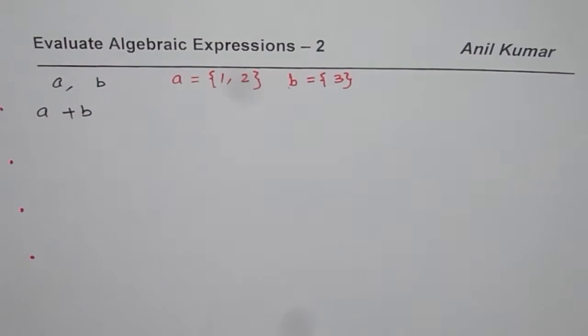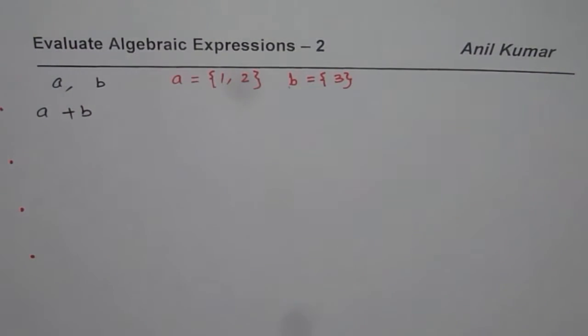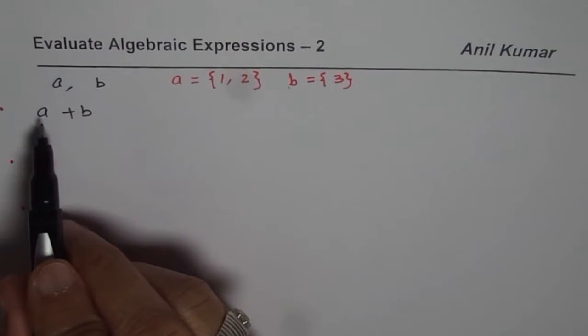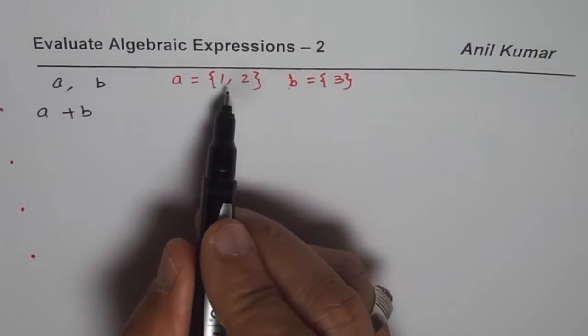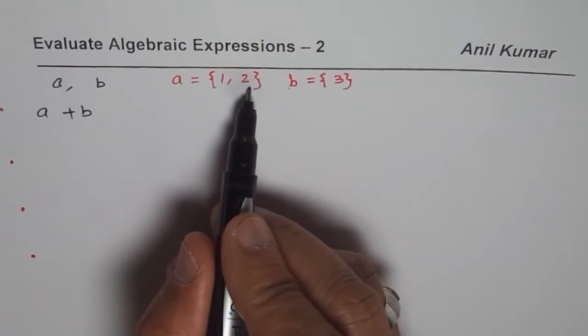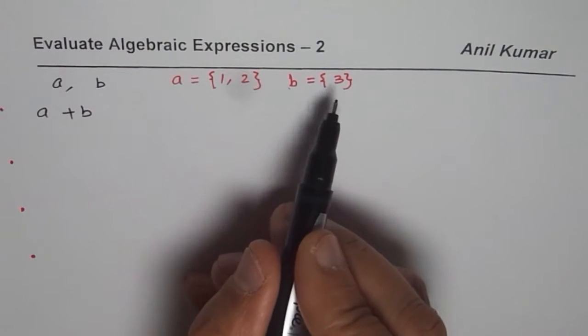So A we have two different values. So we will do A plus B but we will use two values for A, 1 and 2, and both the time we will use B as only 3.